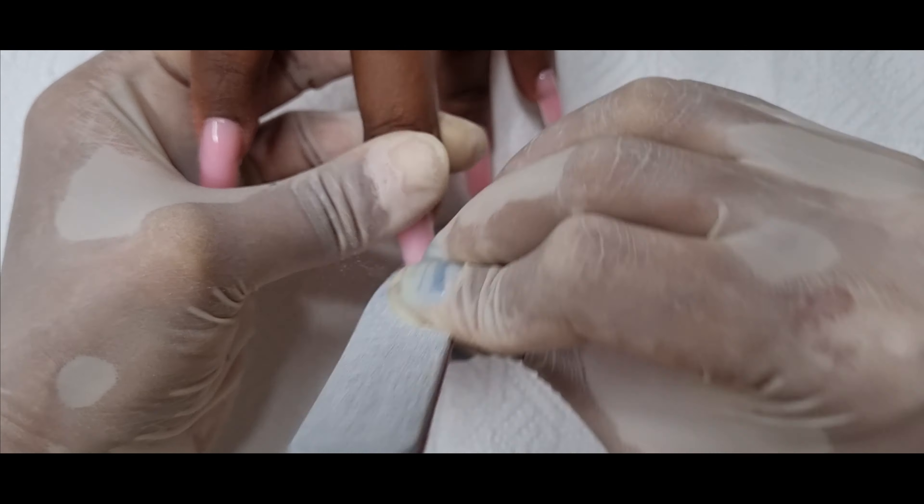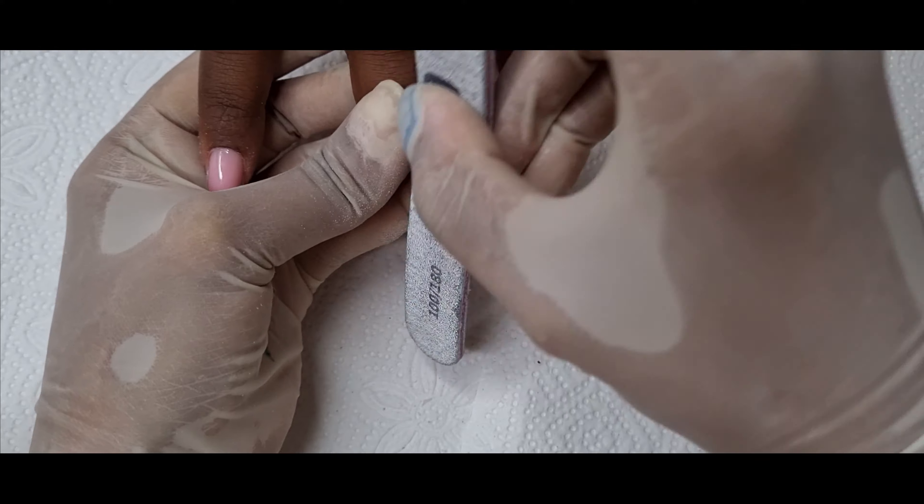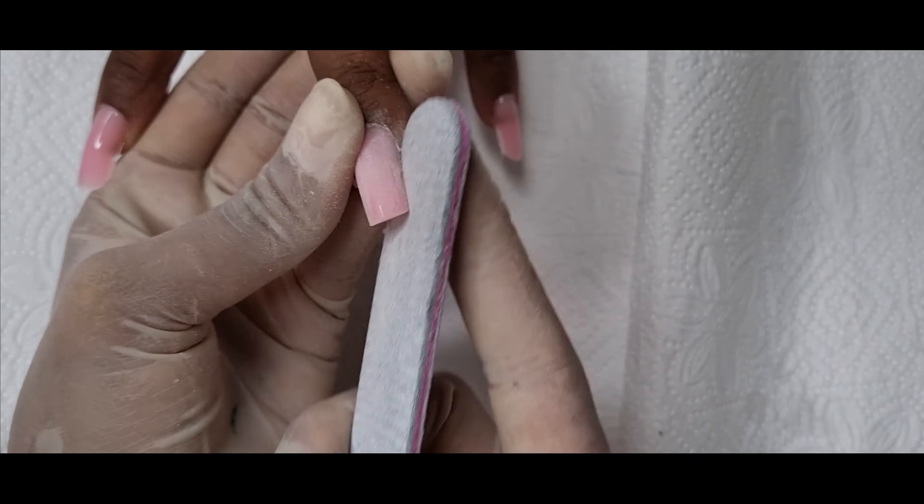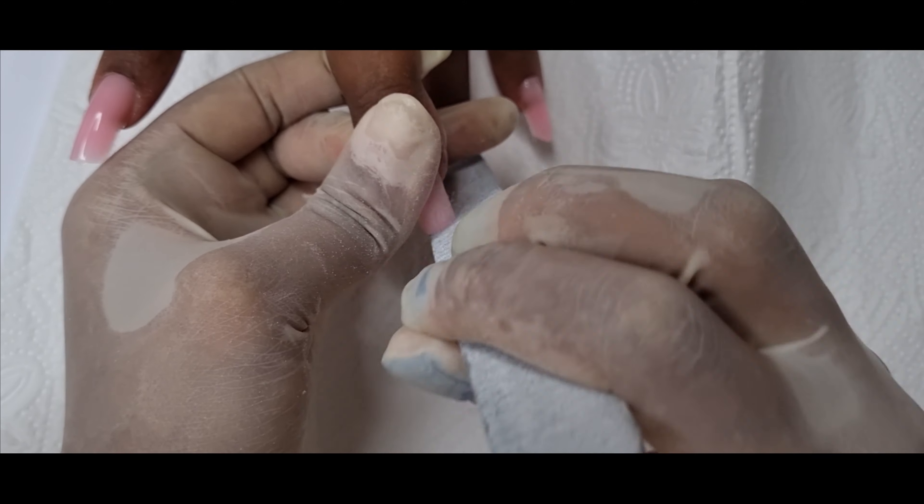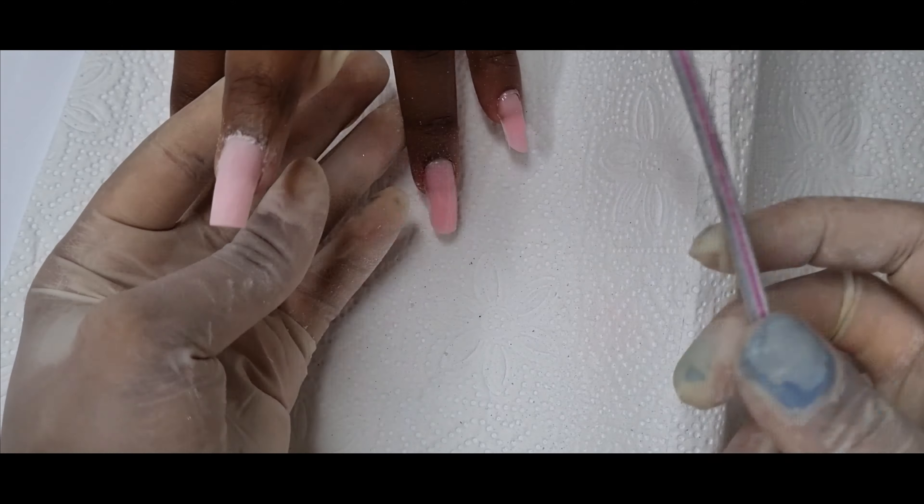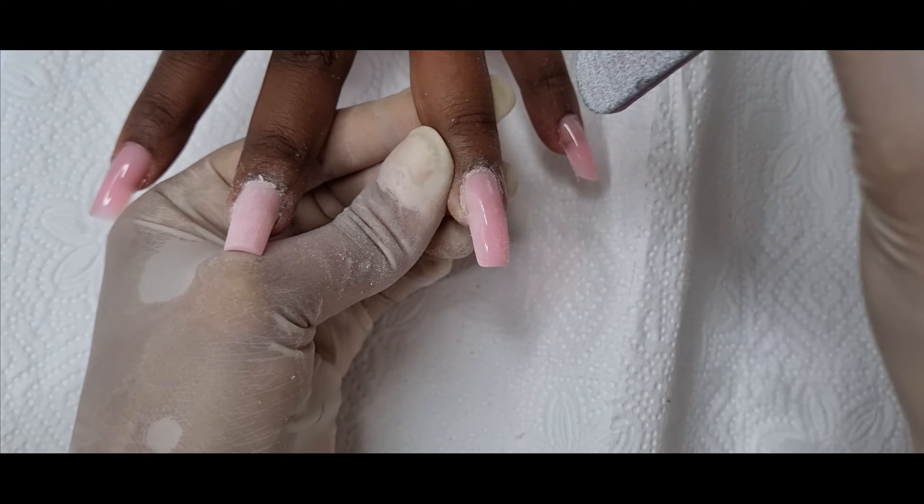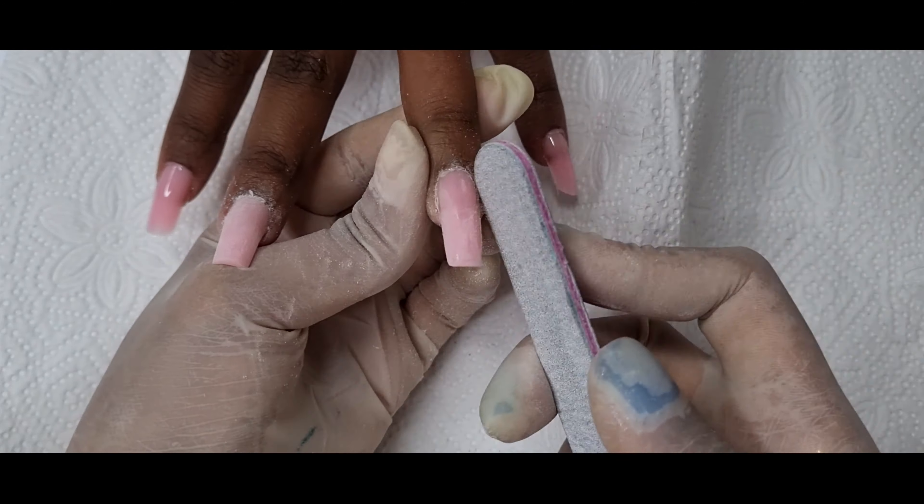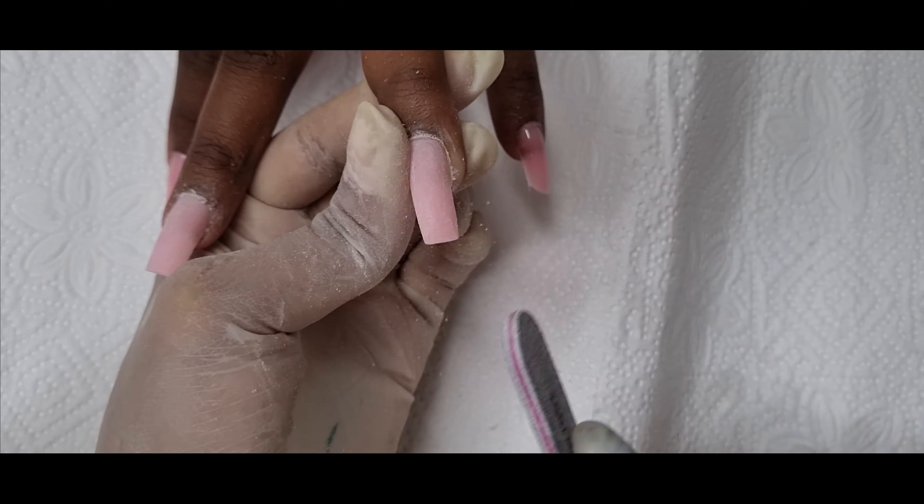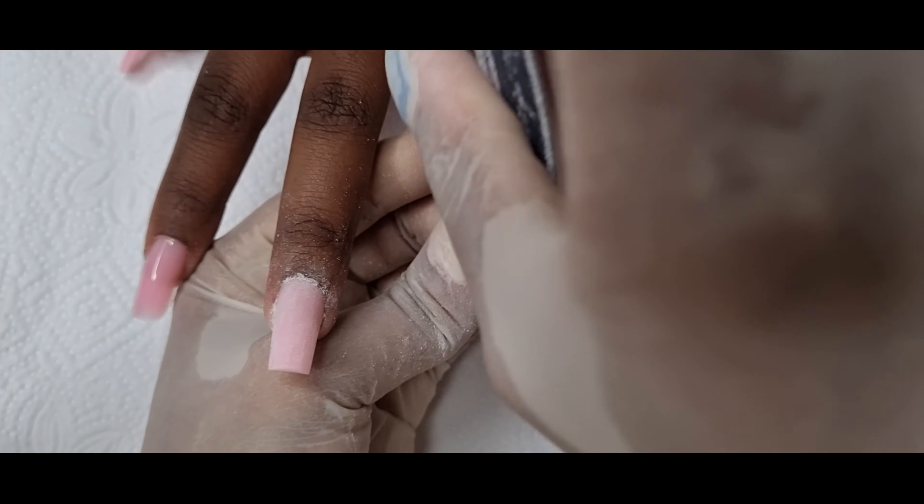So poly gel is quite easy to file compared to acrylic. So I usually file it using the 180 grit side and I file the top of the poly gel. I will put top coat but that stage is optional, but it's always better to put top coat because you will maintain the shine of the nails for a lot longer.